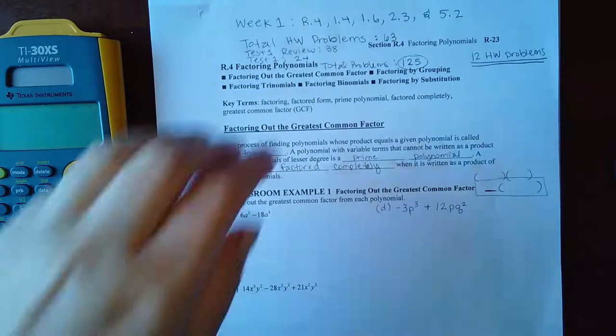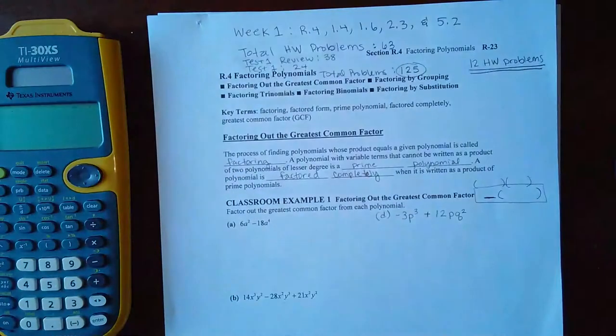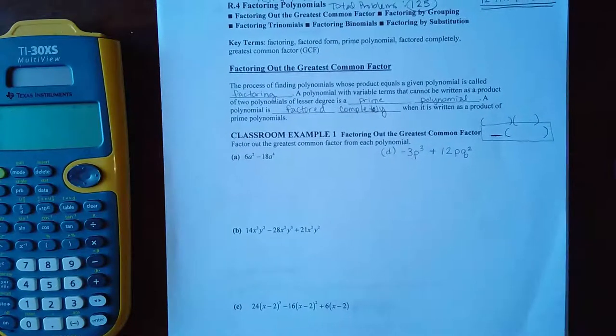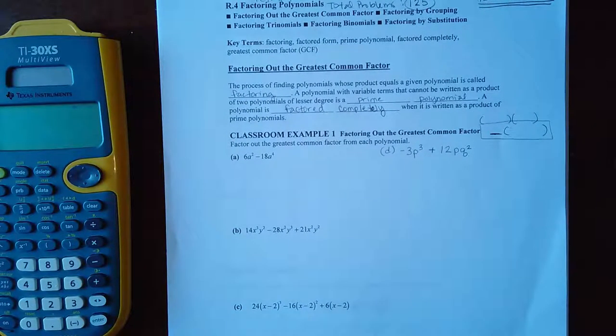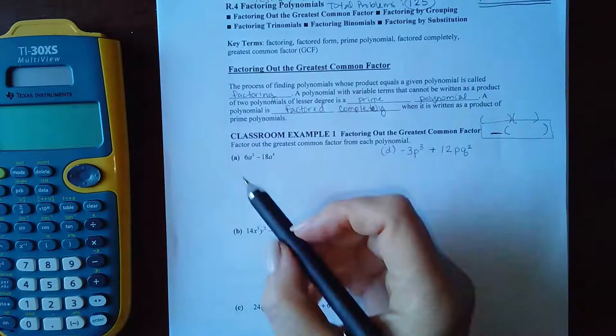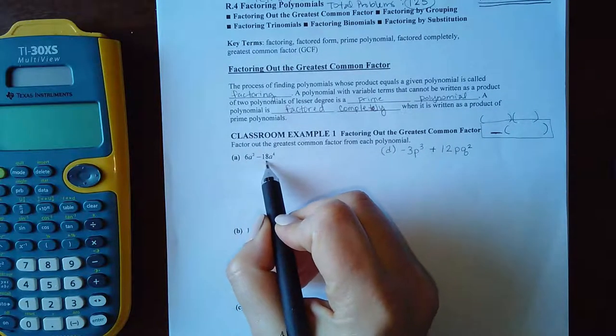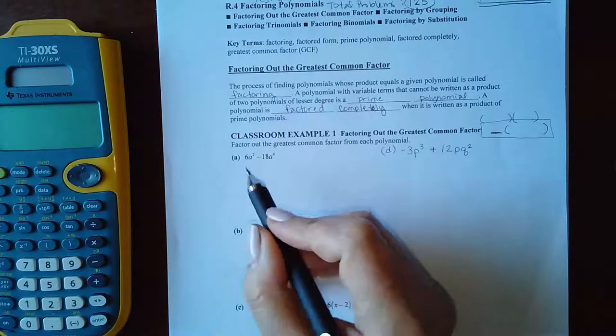So the first thing you need to do is identify what the two terms have in common, and that becomes the monomial that you factor out. So for A, I noticed that 6 and 18 can both be divided by 6.